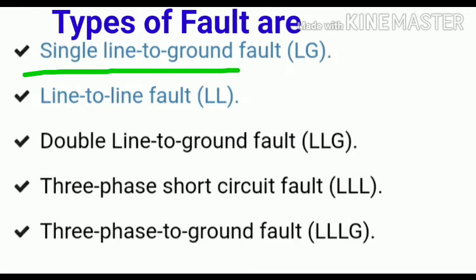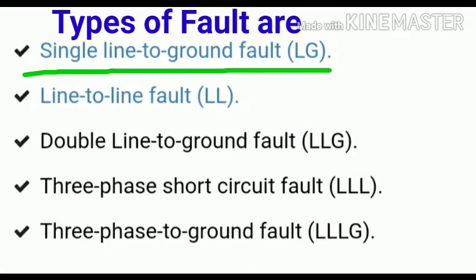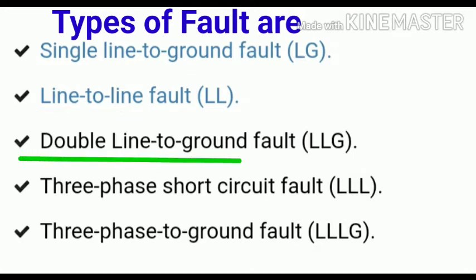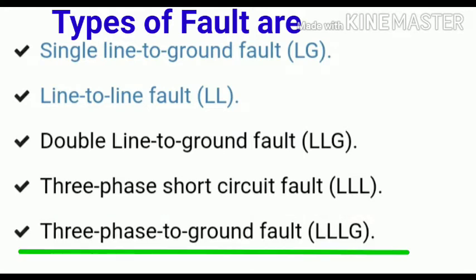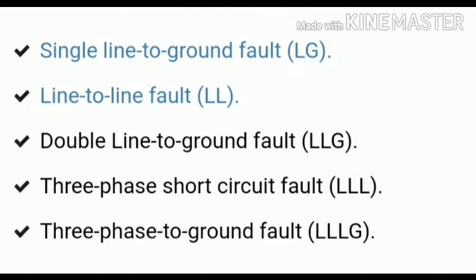The unsymmetrical fault represents an unbalanced situation in a transmission line. The types of unsymmetrical faults are classified as: single line-to-ground fault (LG), line-to-line fault (LL), double line-to-ground fault (LLG), three-phase short circuit, and three-phase-to-ground fault (LLLG).